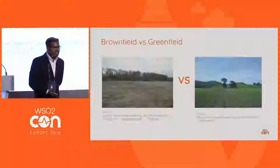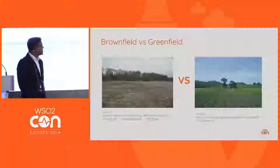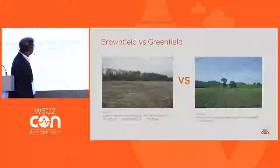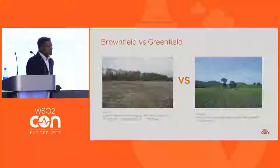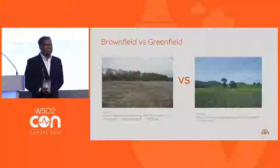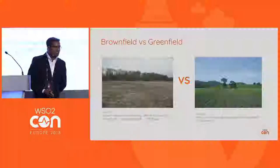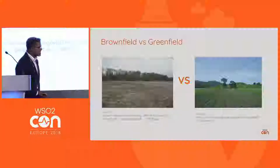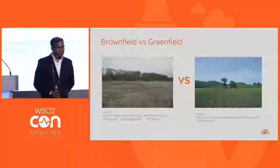So what is brownfield? These two images we have taken from some online resources. On the right-hand side we have the greenfield, and on the left-hand side we have the brownfield. The definition of brownfield changes from country to country, but in urban planning, brownfield is defined as previously used land for industrial or agricultural purposes.